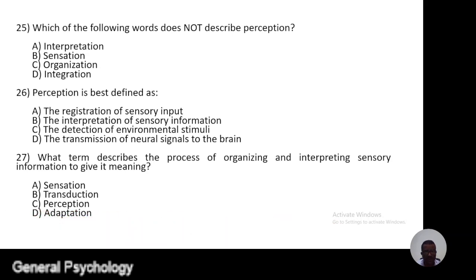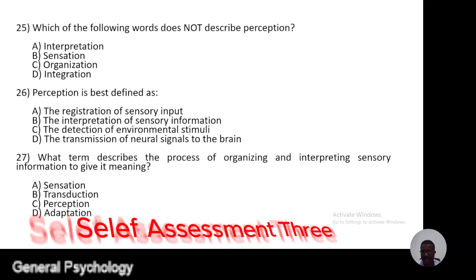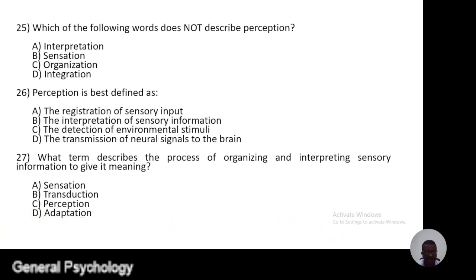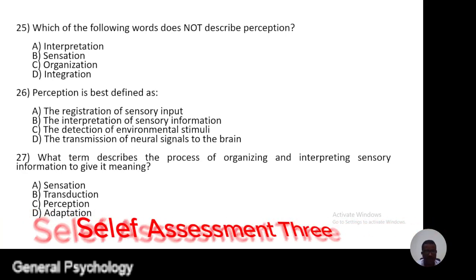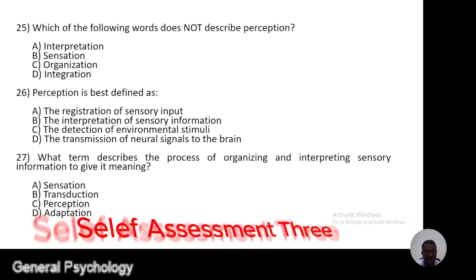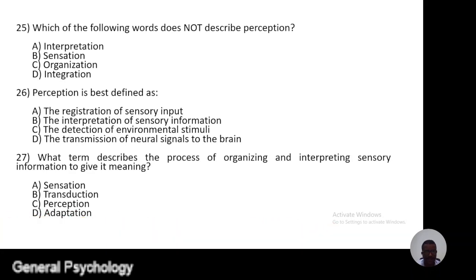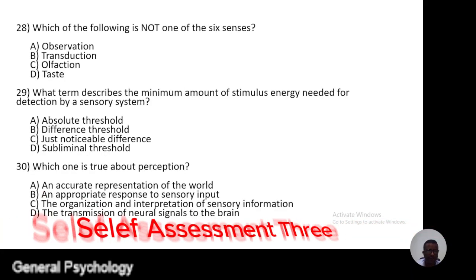Question 27. What term describes the process of organizing and interpreting sensory information to give it meaning? A, sensation; B, transaction; C, perception; D, adaptation.